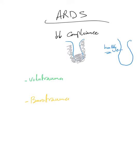In ARDS there is very poor compliance. Compliance is the stretchability of the alveoli, and because of all the fluid inside, there is less space for tidal volume. The alveolus is unable to stretch properly due to the fluid, so alveolar pressure goes higher. There's no space for volume, the alveolus cannot stretch, and that leads to increased plateau pressure - poor compliance leads to volume trauma and barotrauma.